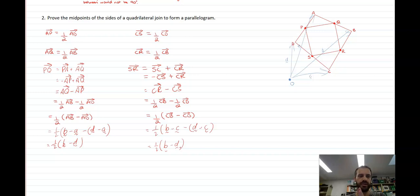So what do we have? We have two vectors that are equal. We've just shown that vector PQ is equal to vector SR because they both can be expressed as half B minus D, half B minus D. If two vectors are equal, they have the same length, and they're also parallel. That's a parallelogram.